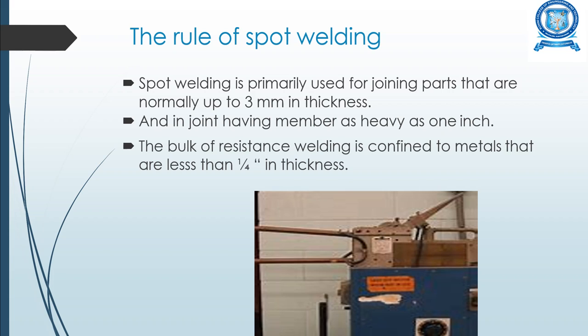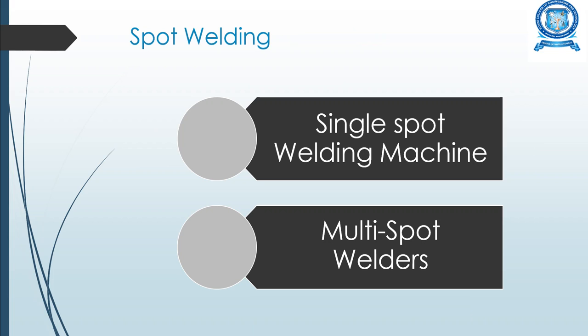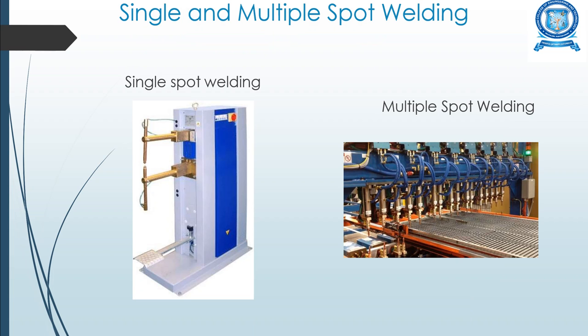There are two types of spot welding machines: single spot welding machines and multi-spot welders. In a single spot welding machine, there is only a single pair of electrodes, so only one spot is welded at a time. In multi-spot welding, there are more electrodes, allowing multiple weld joints to be made simultaneously.